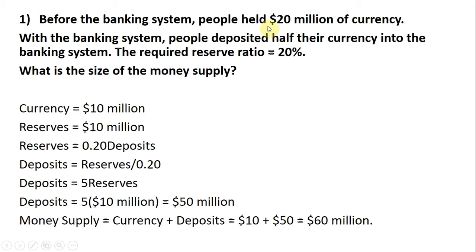So, people have $20 million, and with the banking system, they deposit half of that into the bank. People are holding $10 million in currency — just half of $20 million. That means banking reserves equal $10 million. Half of this money was deposited in the banking system, meaning banks have reserves of $10 million.